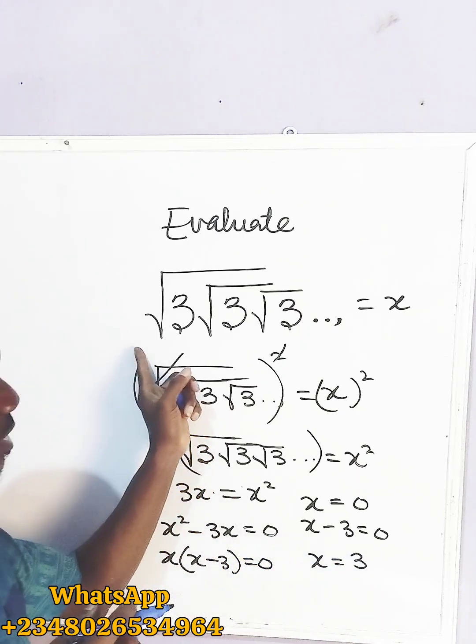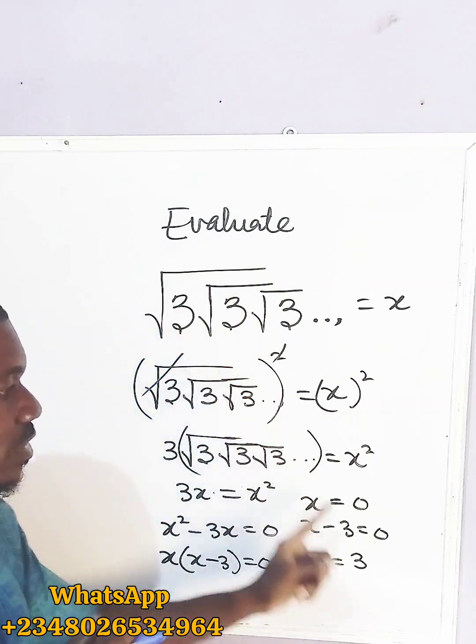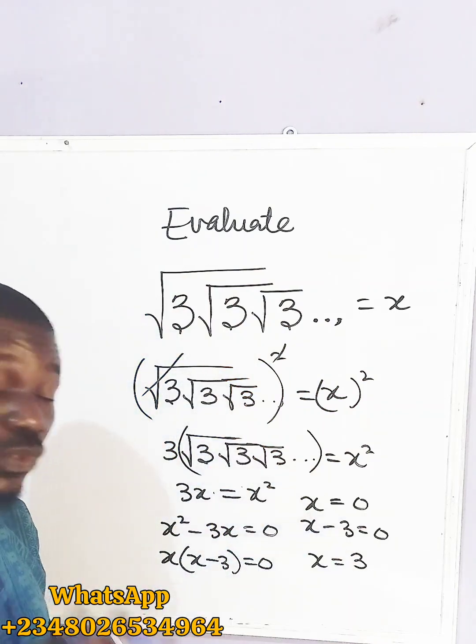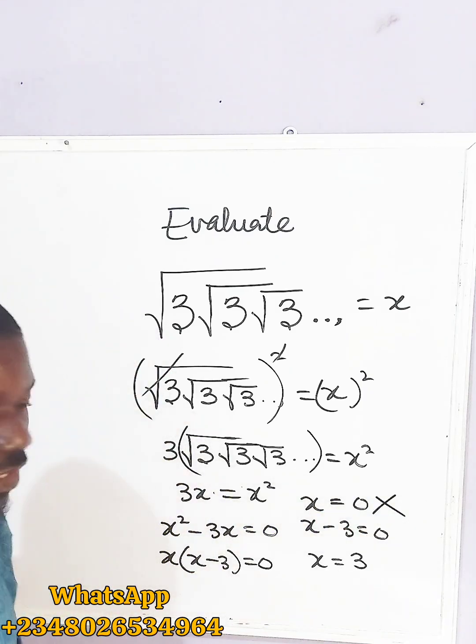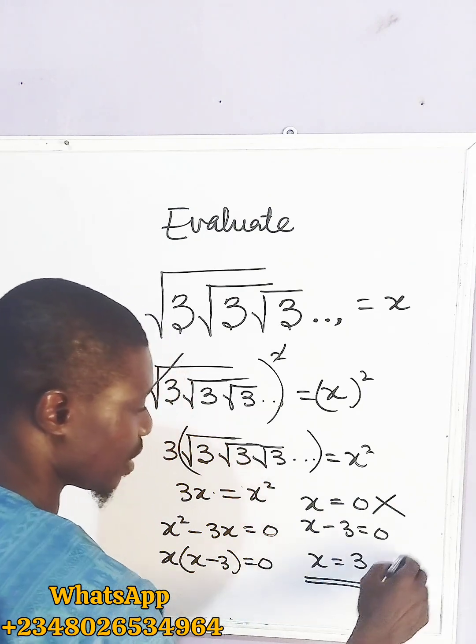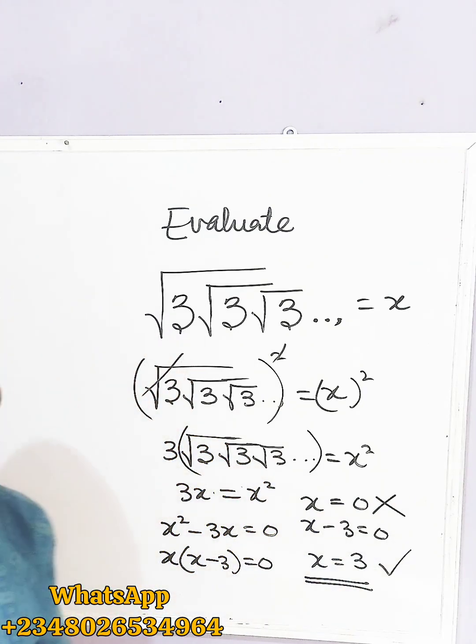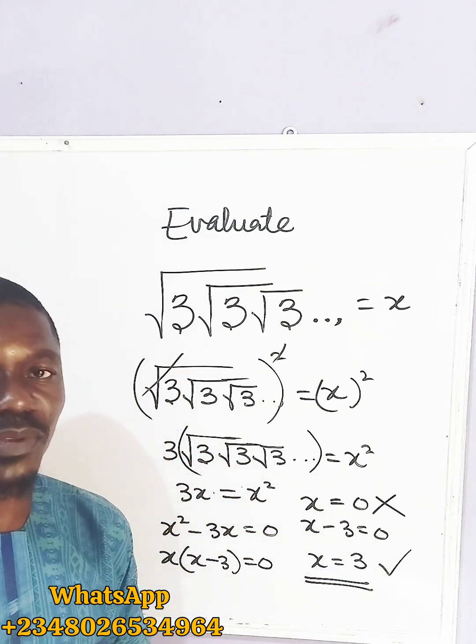Now, but because we know that after resolving this, we can't, we shouldn't even get zero. So this can't be the answer. So the value of x here will now be what? 3. Thank you, and God bless you.